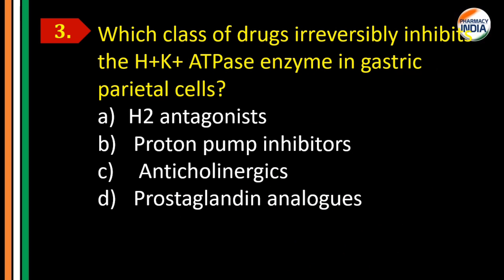Question number three: which class of drug irreversibly inhibits sodium-potassium ATPase enzyme in the gastric parietal cell? Options: A) H2 antagonist, B) proton pump inhibitor, C) anticholinergic, D) prostaglandin analog. Gastric acid is secreted by parietal cells, and in those parietal cells, proton pumps are present — specifically the H+/K+ ATPase enzyme.